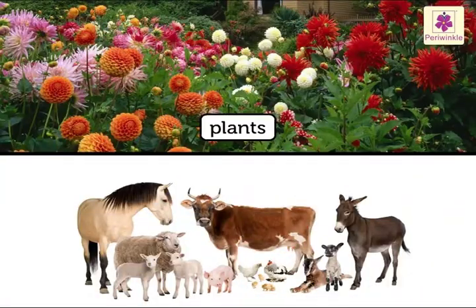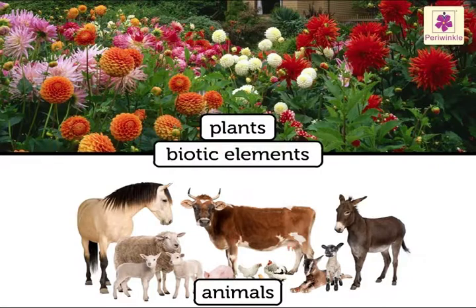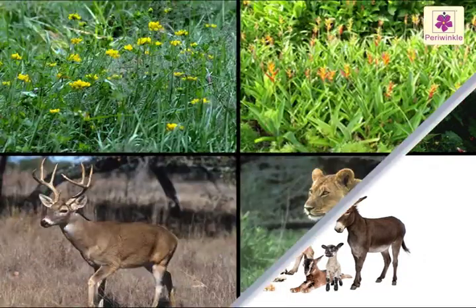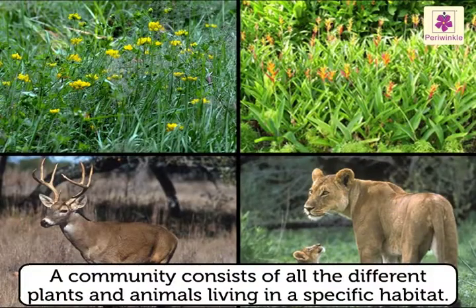Plants and animals are biotic elements. A community consists of all the different plants and animals living in a specific habitat.